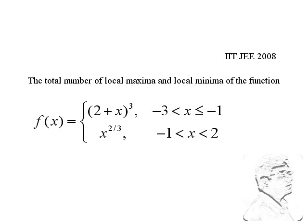This question came in the 2008 paper 1 and it was not straightforward. If you differentiate (2 + x)³ and equate it to 0, you get x equal to minus 2. When you differentiate again, the second derivative becomes 0, which indicates the possibility of a point of inflection. Simple differentiation equated to 0 was not really going to work in this question.